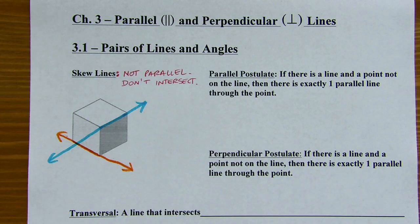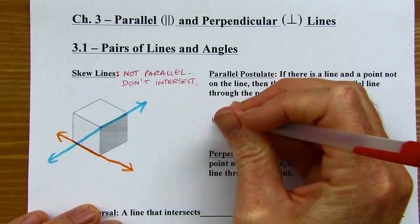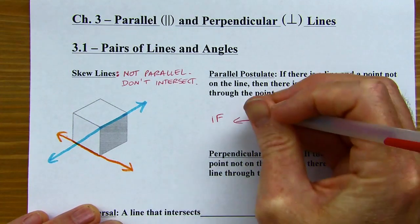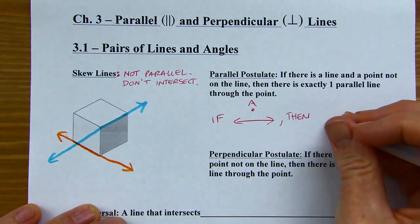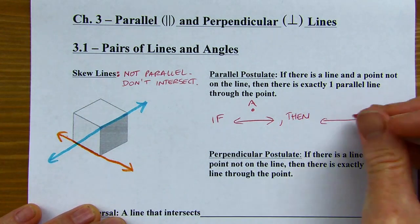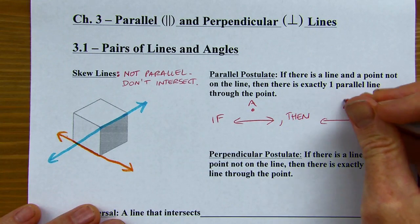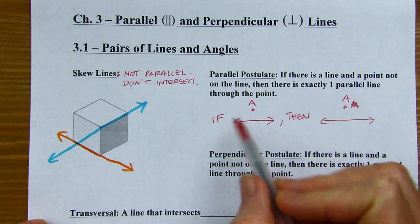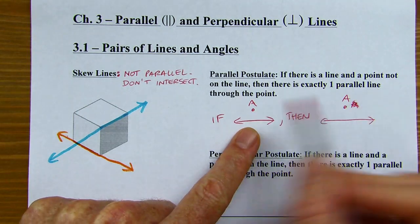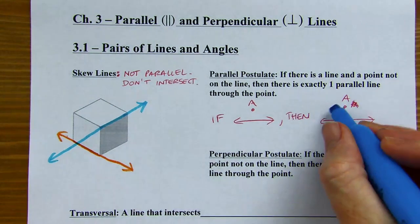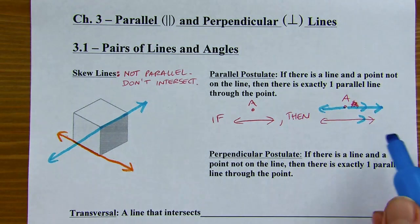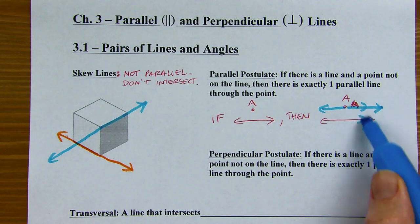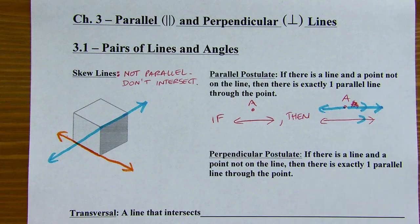We've got two different postulates here. The parallel postulate says that if there is a line and a point not on the line — something like that — then there is exactly one parallel line through the point. There's just going to be one line that you can pass through point A that is parallel to the red line. That little symbol, those little arrows, just means they're parallel. Sometimes you'll see the double arrows — that works too.